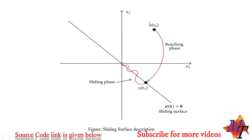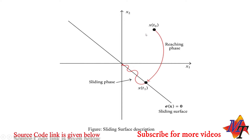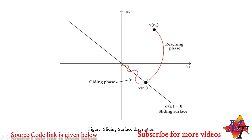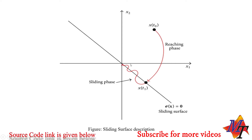In the reaching phase, the system state x at t-naught (initial time) has an external control effort applied, and at time t1 this makes the system state reach the designed sliding surface in very less time — that is the reaching phase. Next is the sliding phase, which ensures that the system state remains on the sliding surface and finally reaches its equilibrium point.